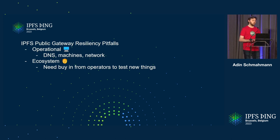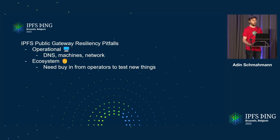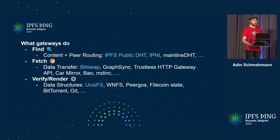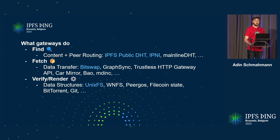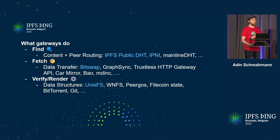But there's another one that happens more under the covers: ecosystem resiliency issues, which is needing to get buy-in to test new things. If you go back and you're like, I would like to support BitTorrent and Mainline DHT, or CarMirror, or Bao, or WinFS — how do you do that right now? You can either run a gateway yourself, but those are kind of expensive, and didn't I just want to work on WinFS, not run a gateway? Or you go ask Protocol Labs and Cloudflare if they feel like doing this, but they may have different priorities or work at different timescales, and that feels pretty bad.